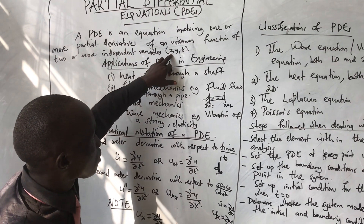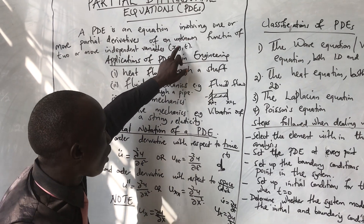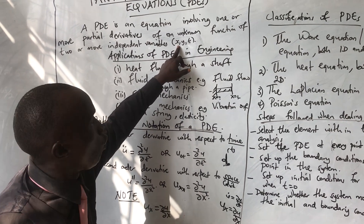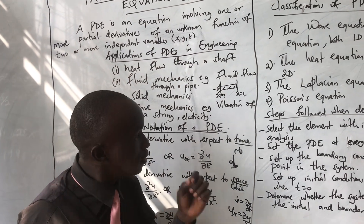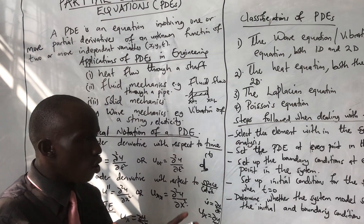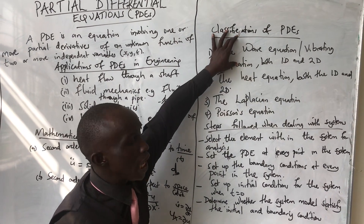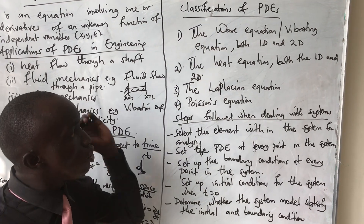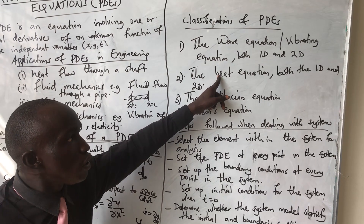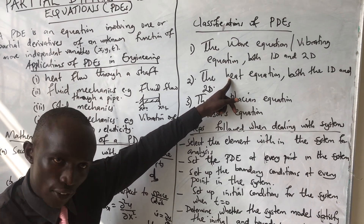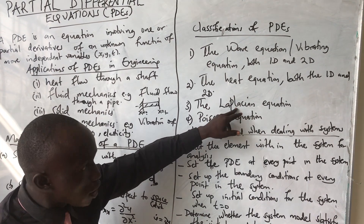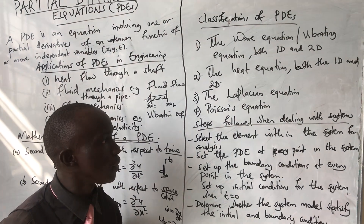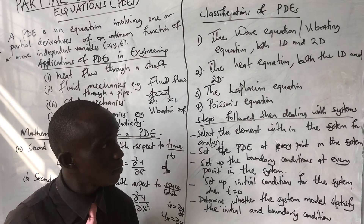The variables can be x, y, and t. When in x, y, and t it is two-dimensional; when in x and t alone it is one-dimensional. In our discussion we shall analyze how to model the wave equation and solve it, how to model and solve the heat equation, how to model and solve the Laplace equation, and how to model and solve the Poisson equation.